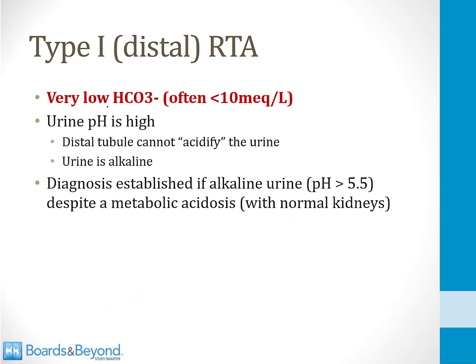Distal RTAs are famous for causing a very low bicarb. A normal bicarb is about 24, and in a distal RTA it can get less than 10. The reason for this is because the way that the body excretes most of the daily acid load is by secreting it into the urine in the distal nephron. So when that's impaired, the body really loses its ability to get rid of acid, and therefore severe acidosis can occur. A classic finding of a distal RTA is for the urinary pH to be high — when the urine cannot be acidified by those cells in the distal collecting duct, the urine will be alkaline.